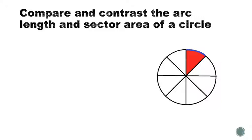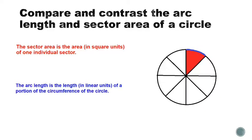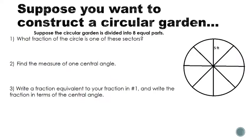Before we go further, I want to compare and contrast arc length and sector area. Arc length, covered in a previous video, is how long a stretch of the arc is — measured in feet, inches, or yards. The area of a sector is the area in square units of an individual sector. If arc length is how long the blue arc is, sector area is how many little squares it takes to cover that slice of the circle — and that's where we're going in this video.